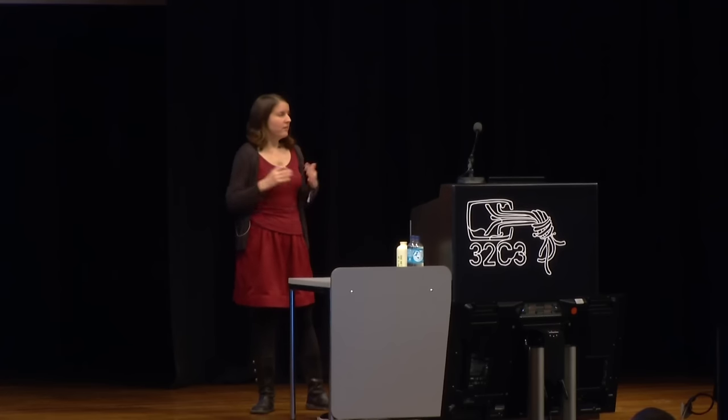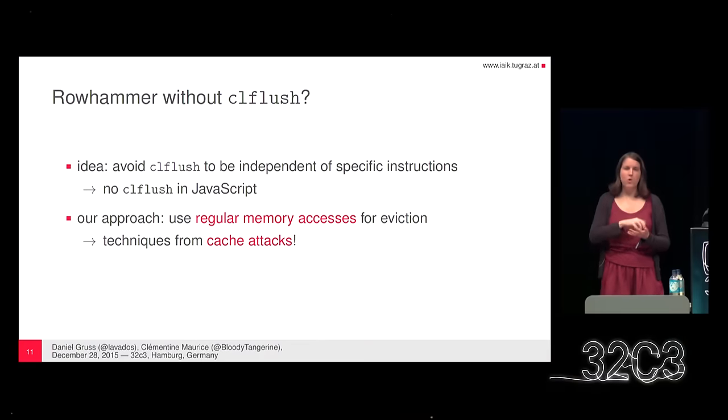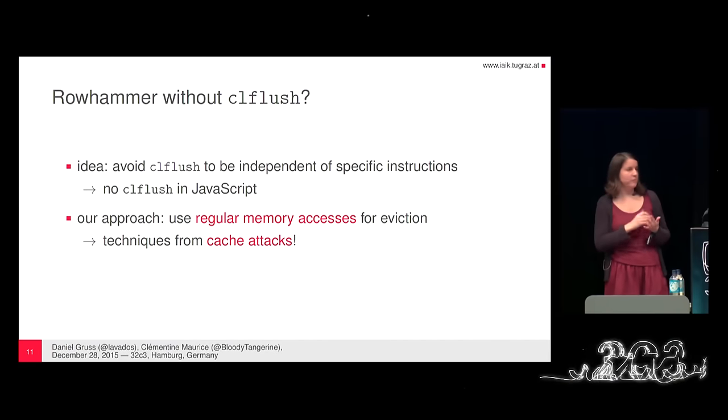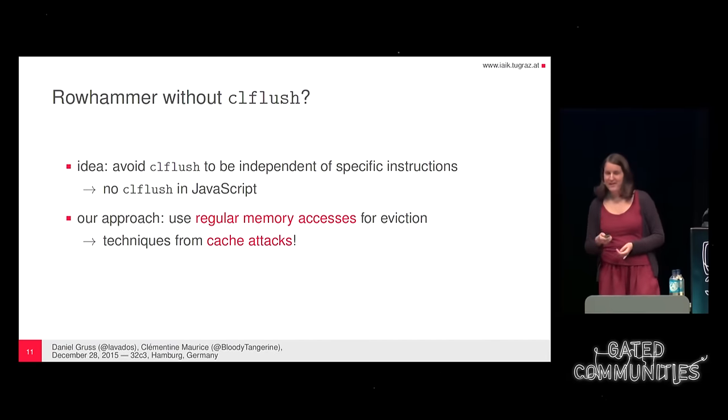What we would like to do is perform the Rowhammer attack without the CLflush instruction. The global idea is to avoid CLflush because it is architecture-specific to x86 and not available from JavaScript. This would really extend the world of possibilities. Our approach is to use regular memory accesses to evict the cache, and the nice thing about this is that cache eviction is at the core of all cache attacks — it's what we know how to do best.